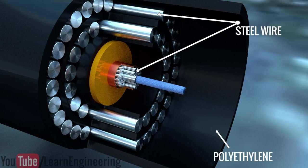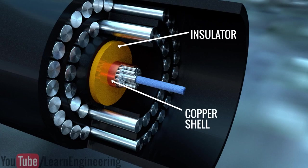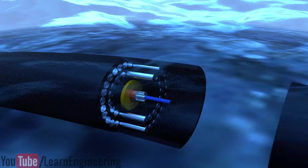Now, the question is, where does the amplifier get power from under these deep oceans? Well, for this, a thin copper shell is used inside the cable, which carries electric power along the cable so that the amplifiers can be powered.